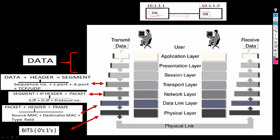Initially, data will be at the application layer. Data will move to the presentation layer where it will be represented in its actual format. Further, data will move to the session layer where sessions will be created, maintained, and terminated. Till here, it will be in the form of data.